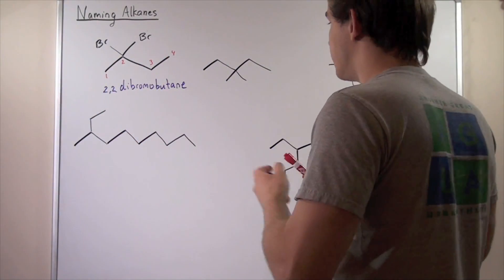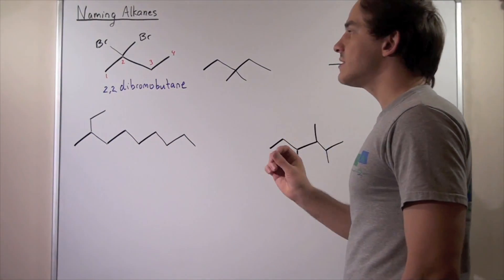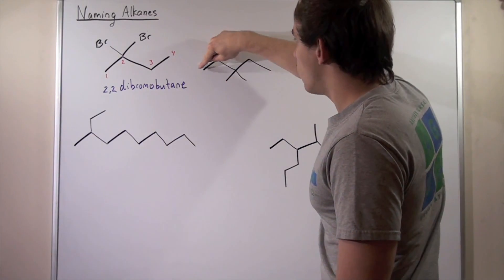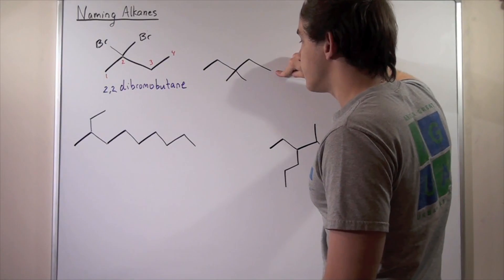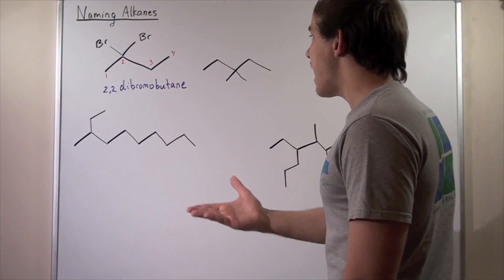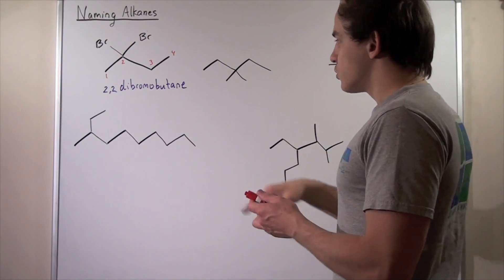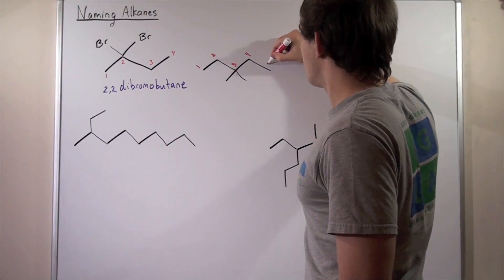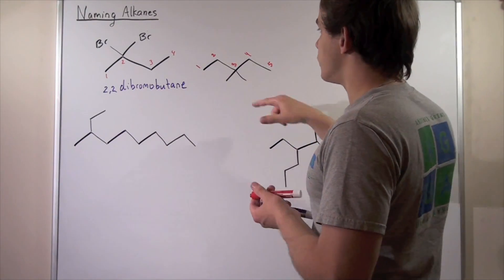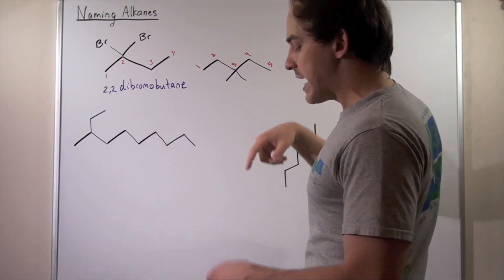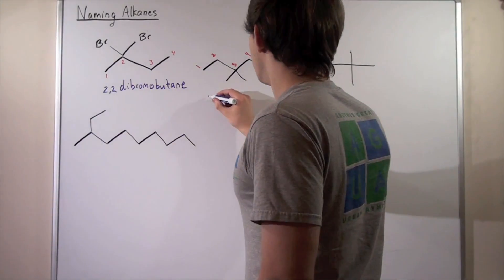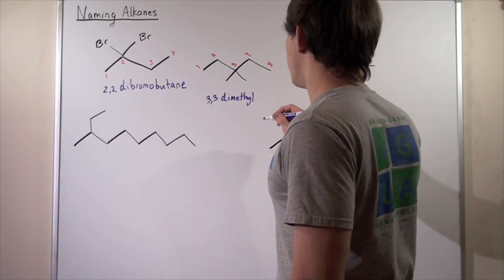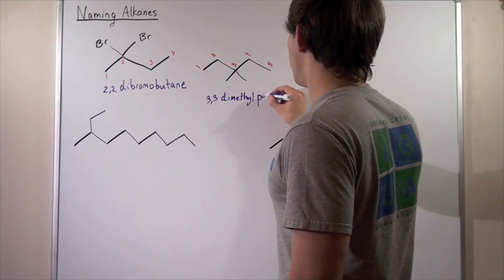Let's look at the second example. Once again, we want to find the longest possible carbon chain: one, two, three, four — or one, two, three, four, five. Now since this molecule is symmetrical, it doesn't matter if we start from this end or this end. So let's begin: one, two, three, four, five. Our substituents are both on the third carbon, so that means we're going to have 3,3-dimethyl. They're both methyl groups, and we have five carbons, so that means we have pentane — 3,3-dimethylpentane.